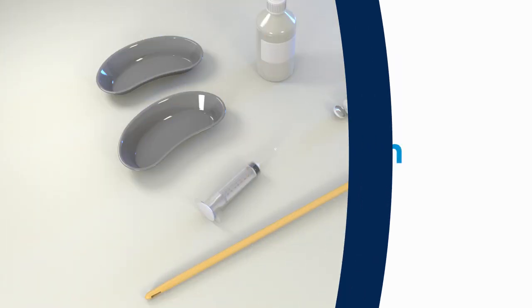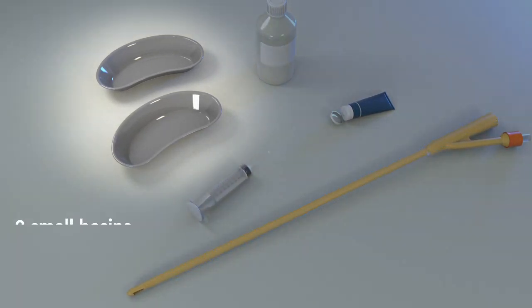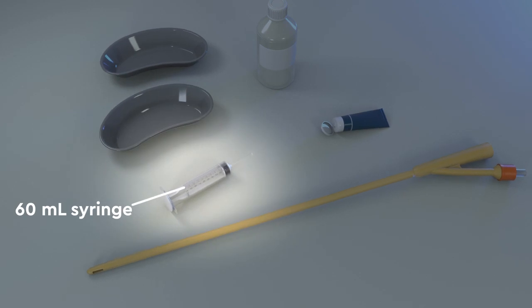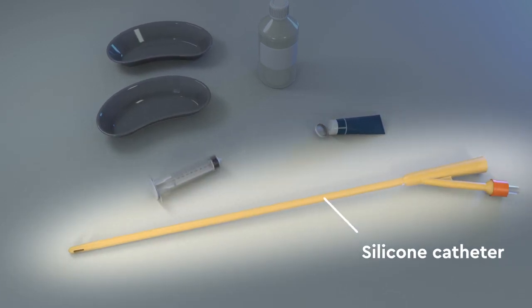You'll need the following supplies in order to perform a rectal irrigation: two small basins, a 60 milliliter syringe with catheter tip, and a silicone catheter.